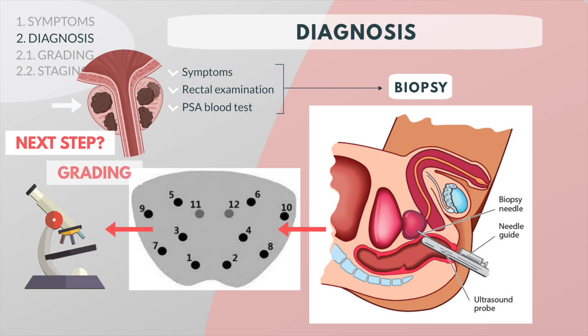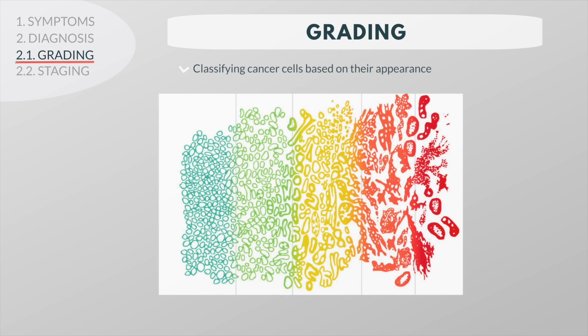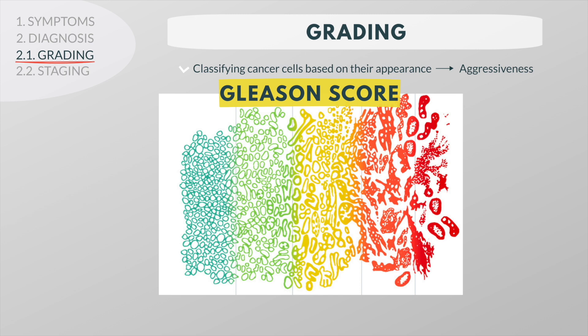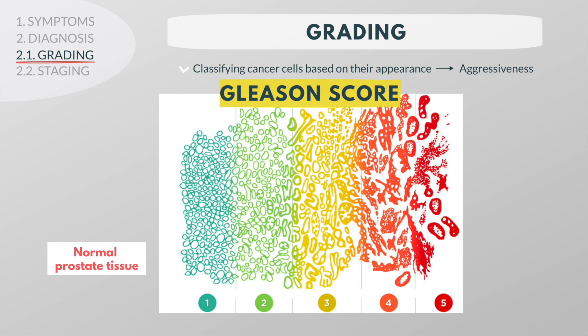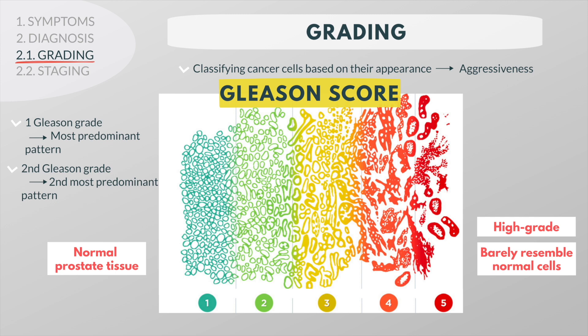When a tumor is discovered, its grade and stage must be determined. Grading is a way of classifying cancer cells based on their appearance; it helps define the aggressiveness of the tumor. Traditionally, prostate cancer grades were described according to the Gleason score. Dr. Gleason realized that cancerous cells fall into five distinct patterns as they changed from normal cells to tumor cells. Grade one cells resemble normal prostate tissue, and cells closest to five are considered high grade and have mutated so much that they barely resemble normal cells. The pathologist will assign one Gleason grade to the most predominant pattern and a second Gleason grade to the second most predominant pattern.